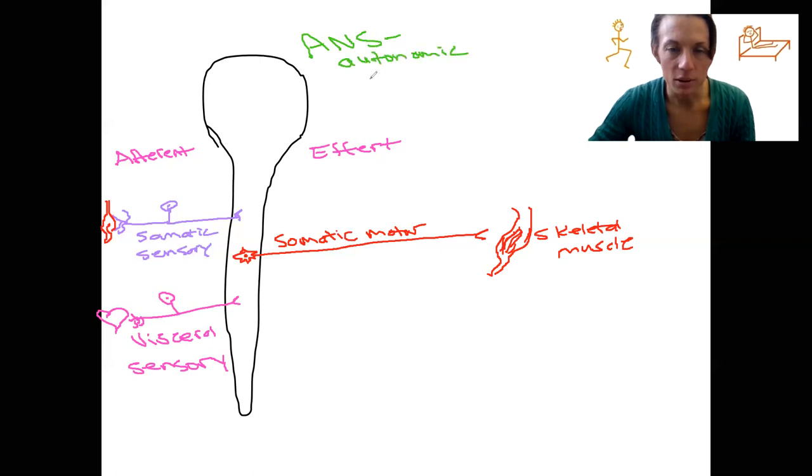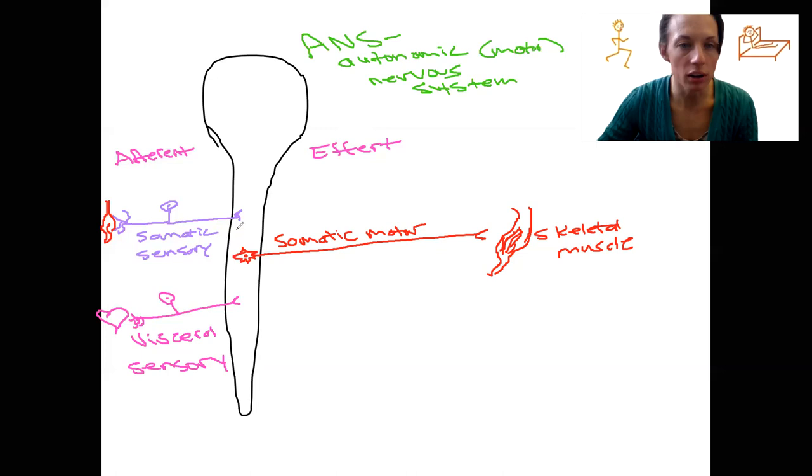There technically is a sensory division to this, right? And we will talk about a reflex at the end that receives input from the visceral organs to then have a response via the autonomic nervous system. But typically we will focus on the motor. So I'm going to draw the location of one of these cell bodies in the spinal cord. The sympathetic nervous system is what I'm drawing right now. This is located throughout the thoracic and lumbar regions.